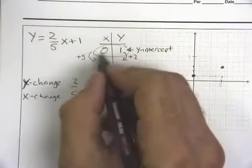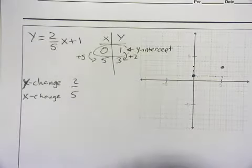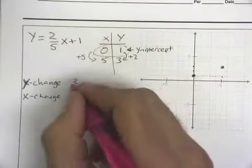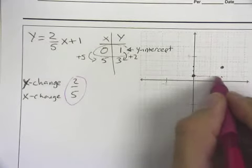That's the point 5, 3. Notice that that's the same thing we would get if we added 5 and we added 2, the point 5, 3.